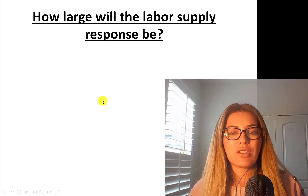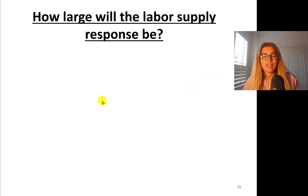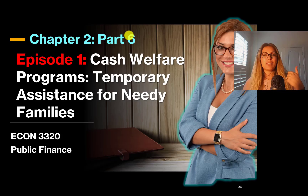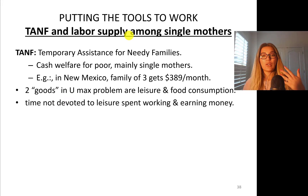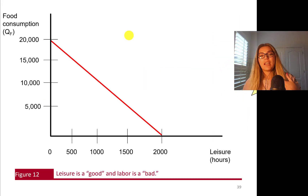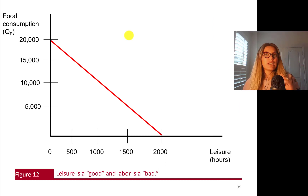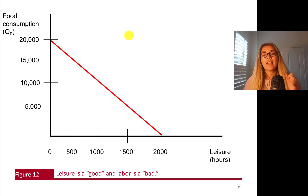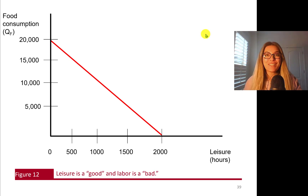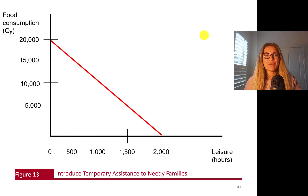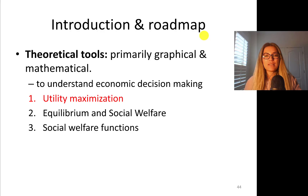We are still at the utility maximization portion of the theoretical tools of Public Finance. In Episode 1, we talked about the Cash Welfare Program's TANF program and learned how this program adjusts an individual's budget line. If you haven't watched that video, it is super important that you watch it now — I will be posting the link here. You need to watch the previous part, which is Part 6. We learned about how to create Temporary Assistance to Needy Families.